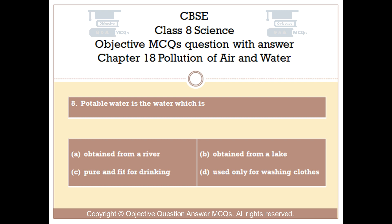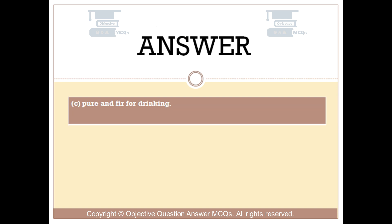Question number 8. Potable water is the water which is? Option A: Obtained from a river. Option B: Obtained from a lake. Option C: Pure and fit for drinking. Option D: Used only for washing clothes. The right answer is Option C — Pure and fit for drinking.